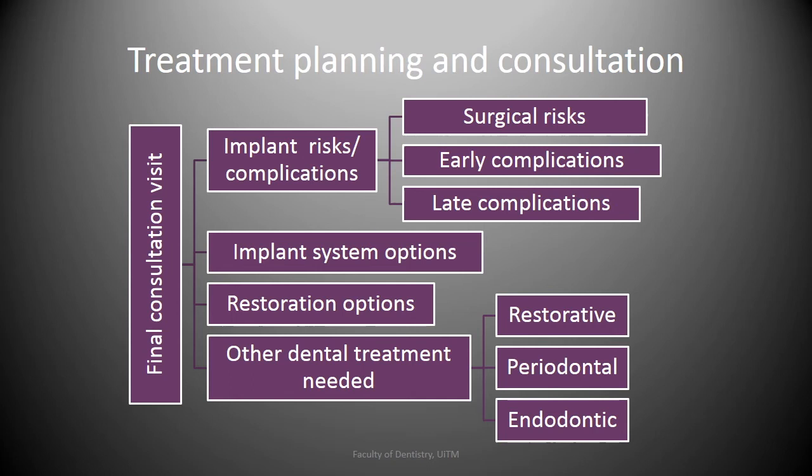The second point is the implant system options, which will mainly depend on the practitioner. The third is the restorative options, including removable and fixed type and materials used for construction of the restoration. The fourth is any other treatments needed, including restorative, periodontal, and/or endodontic treatment.